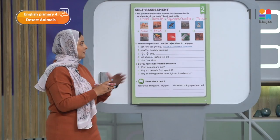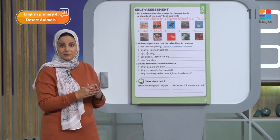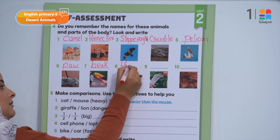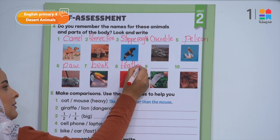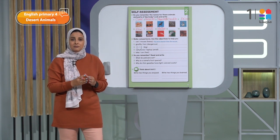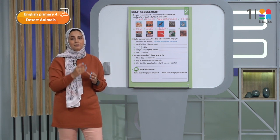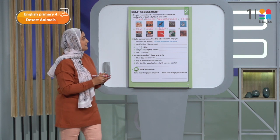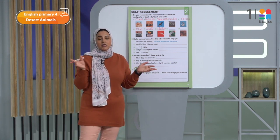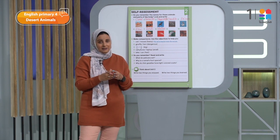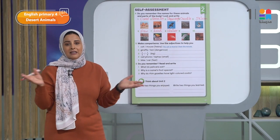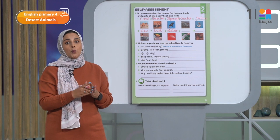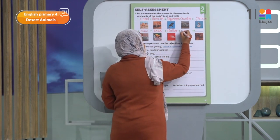Number eight: it's a feather. لما يكون عندي TH لازم أطلع لساني — فمش هقول 'fezzer'، هقول feather. Number nine is a part of the bird's body — ومهم آوي البارت ده عشان بيساعد الطائر على الطيران. It's a wing. Number ten — what covers the animal's body? It's not hair, it's fur.